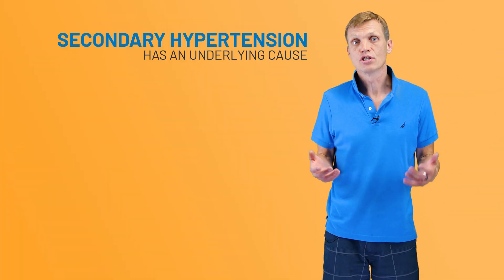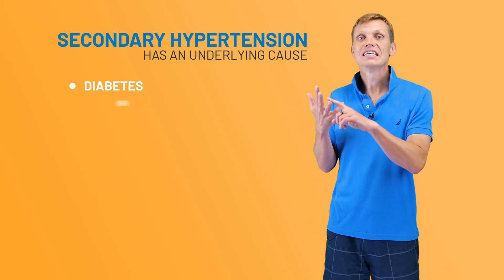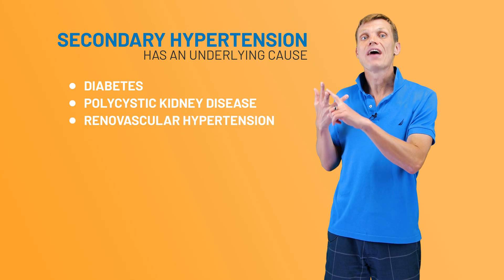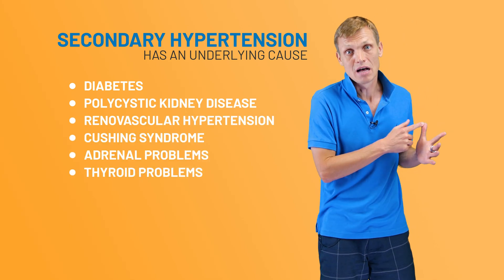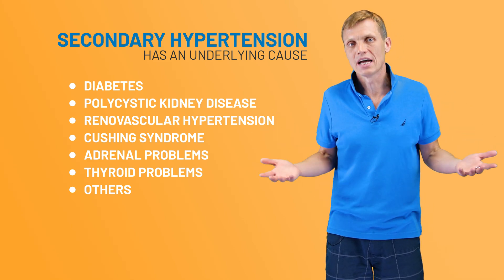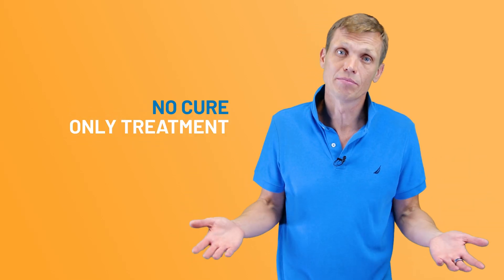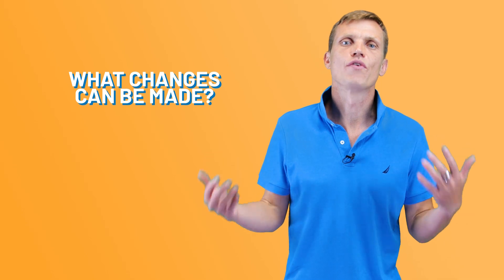Besides that, there is secondary hypertension, which has an underlying cause. This can be diabetes, polycystic kidney disease, renal vascular hypertension, Cushing syndrome, adrenal problems, thyroid problems, and others. So, as you can see, there are a lot of causes of hypertension. Unfortunately, hypertension has no cure, only treatment. Sorry.